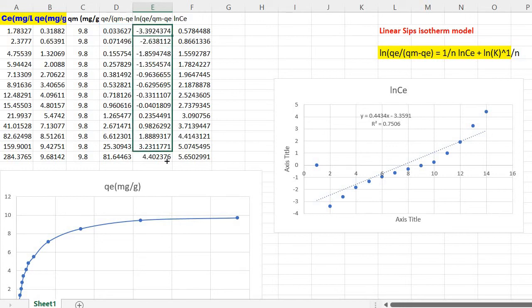And so this is your ln QE divided by QM minus QE value. Again, we need to convert CE into ln CE. So just write equal to ln A2, then enter and scroll down this. This is your X axis and this is your Y axis value.